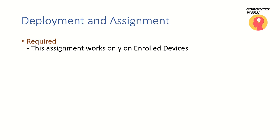Now let's understand the different deployment and assignment types available. The first category is Required. When I add an application in Microsoft Intune, I can assign it to a specific set of users. So the first type is Required — if an application is assigned as required to a specific user, the moment they enroll their device they will start getting a prompt saying 'your organization wants to install this application on your device.' The moment the user acknowledges that request, the application will be installed.